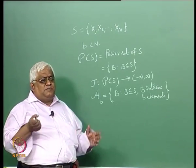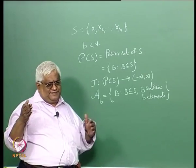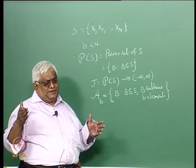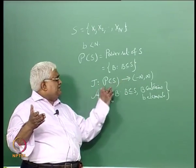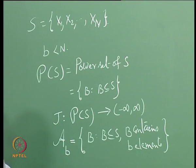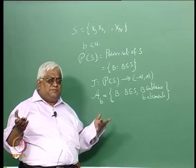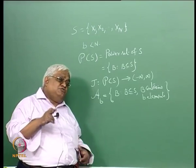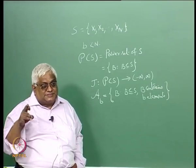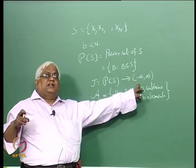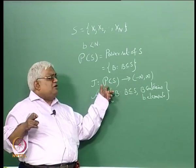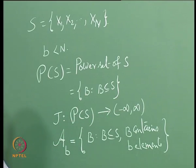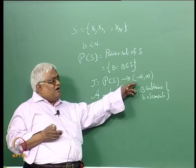In general, you may confine it to 0 to infinity if you want. But what I am saying is that as a general formulation, J which is supposed to give you some sort of importance of that particular subset may take values between minus infinity to plus infinity. I am not saying J will take all values between minus infinity to plus infinity, because here you have finitely many elements.